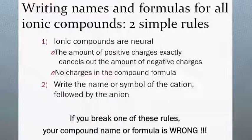To review, whenever you write the name or the formula of a binary ionic compound, in fact this is true for any ionic compound, you must make sure that the charges in the formula all cancel out. Ionic compounds are neutral, so the number of total positive charge must exactly equal the number of total negative charge. Be sure you don't write positives and negatives in the compound formula though. Whenever you write the name or formula, the cation comes first, followed by the anion. If you break one or both of these rules, then the name or formula you wrote is incorrect.